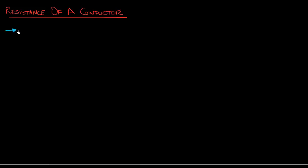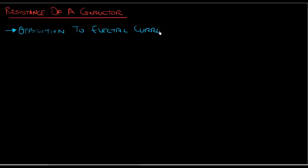It's something we've been introduced to very early on — one of the first concepts introduced when we started studying electricity. Basically, the resistance of a conductor is the opposition to electric current passing through a conductor.